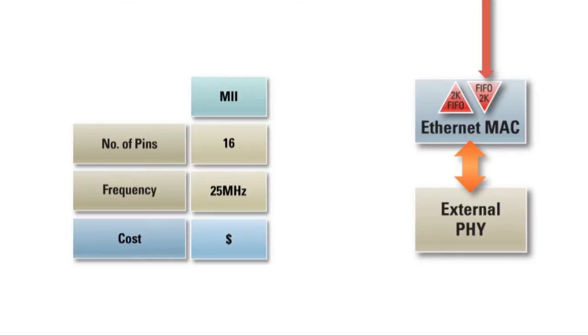For designs that are pin or space-constrained, the Reduced Media Independent Interface, or RMII, is a great option as it uses only six pins. Due to having fewer signals, RMII signal frequencies are consequently higher, 50 MHz, and this means that more care must be taken with board layouts in order to ensure proper signal integrity and acceptable EMI levels.